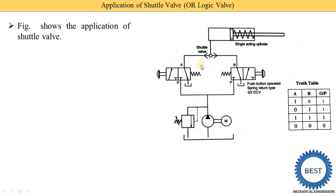Here you can see directional control valve A and directional control valve B. In every position there are three ports, which is why it is called a three-by-two DCV. It is a push-button type, as shown by this symbol. It is also spring return type, and the same applies to the second valve — a push-button operated, spring return three-by-two DCV.